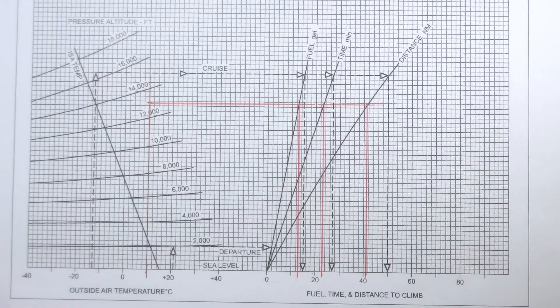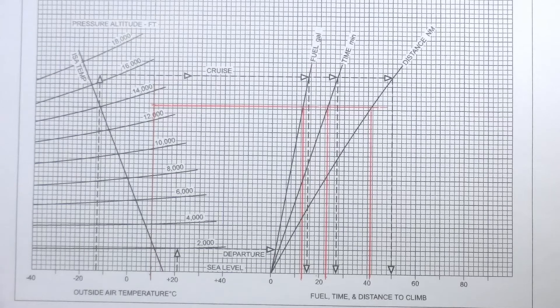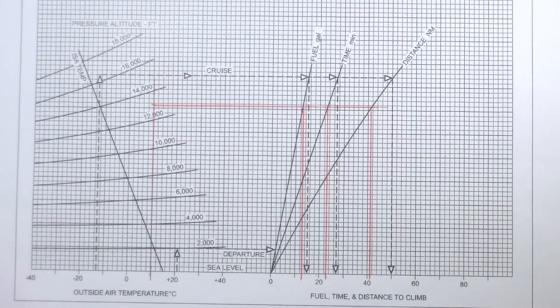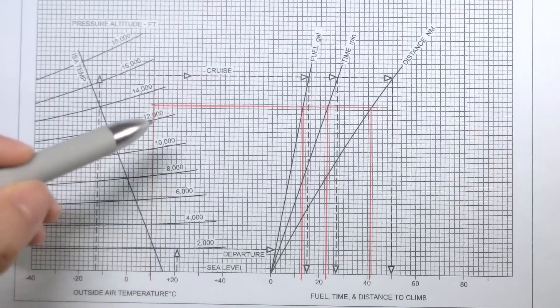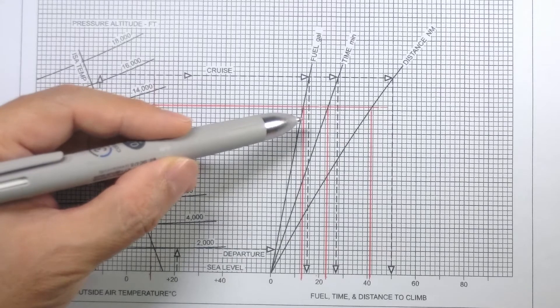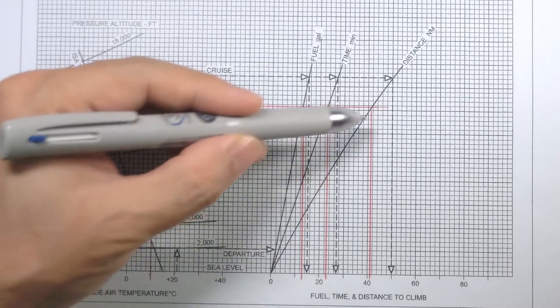So this would be the fuel time and distance that our multi-engine piston airplane would take to climb from sea level to 13,000 feet where the outside air temperature is 10 degrees. These are the corresponding values for fuel, time, and distance.